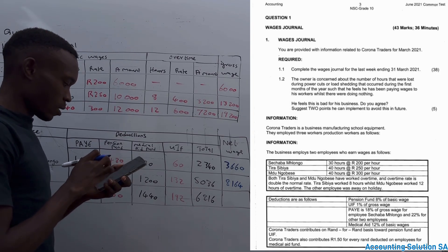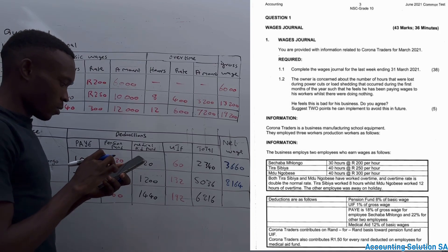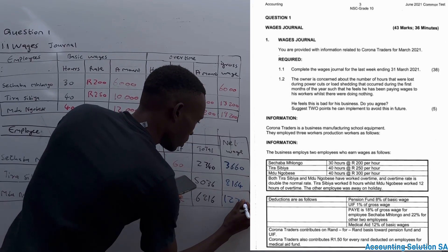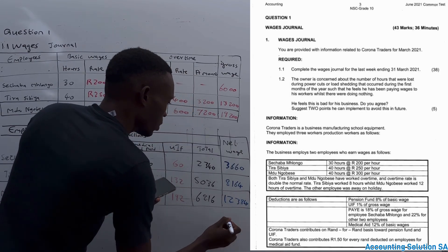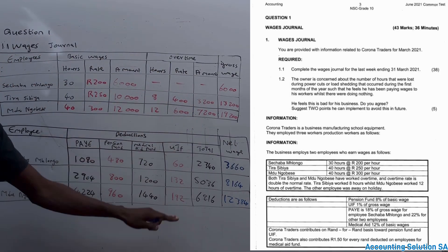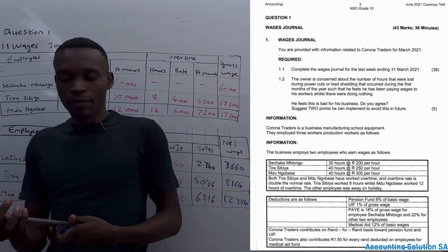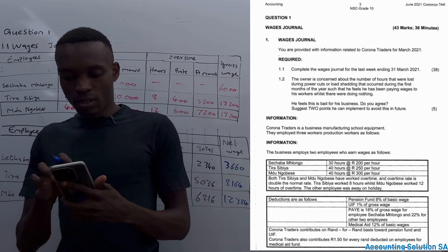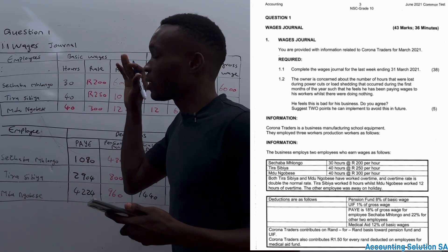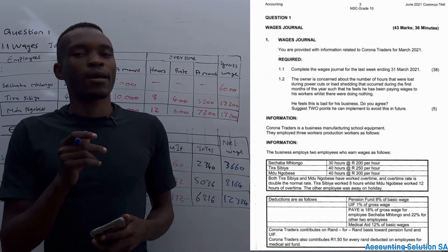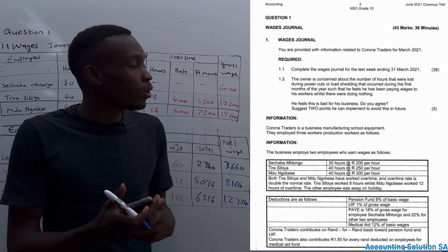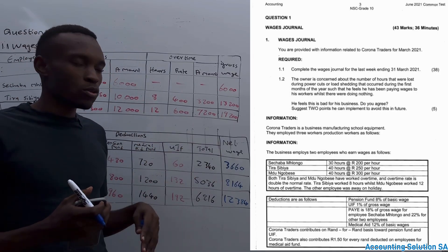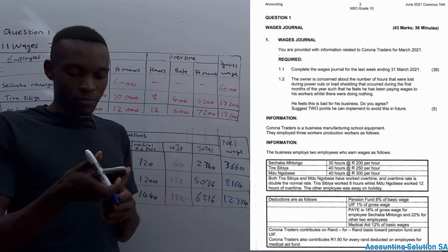So as you can see, the deduction of these people, they're not the same because they're not even earning the same amount. So this is how you calculate your wages journal. But make sure that you check other videos as well that I did for this chapter so that you're going to master it in and out, because in any other question papers you will find some tricky or different kind of transactions.